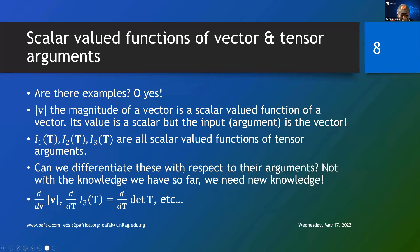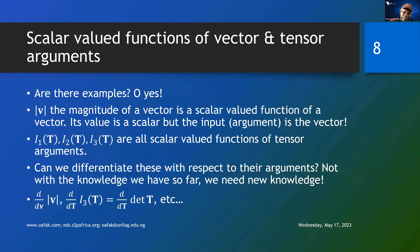Can we differentiate these with respect to their arguments? No — we cannot do that with the knowledge we have so far. We need new knowledge. Finding d/dv of the magnitude of v, or d/dT of I3(T), or d/dT of the determinant of T — all these things require differentiation knowledge that you have right now will not work. Simple. Because of that, we need more knowledge, and that extra knowledge will be obtained by expanding the definition of what we mean by limit and continuity.